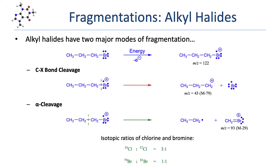The halogen simply falls off as a radical, leaving behind a carbocation. In this case, the bromine-carbon bond breaks to form a bromine radical and a propyl cation. You're only going to see the charged particle in a mass spec experiment, so that means you're going to see a peak at 43, representing that propyl carbocation.